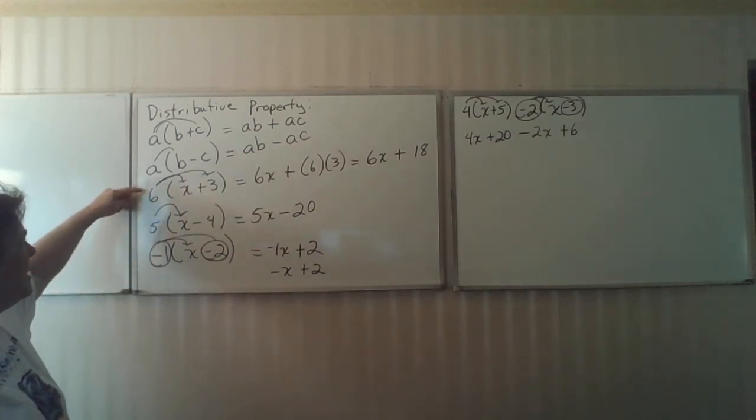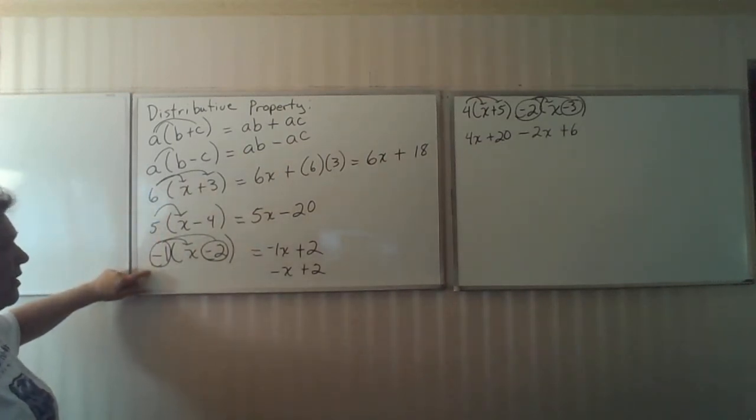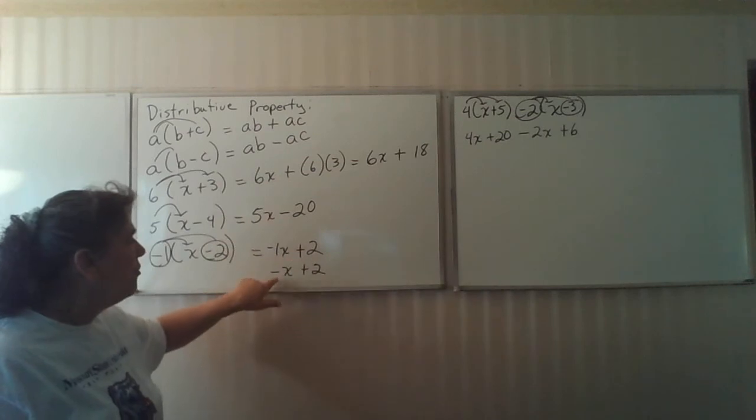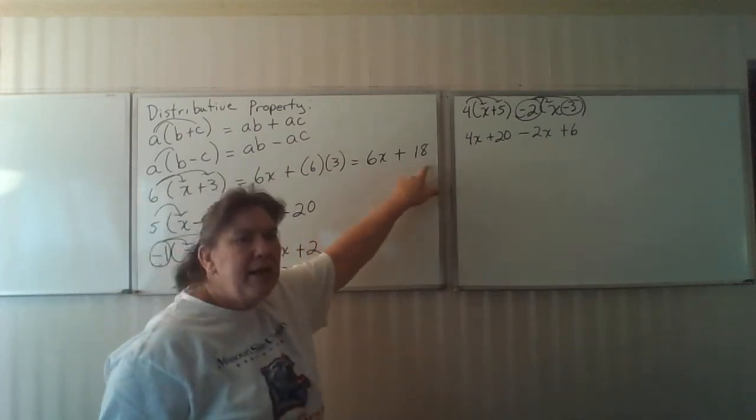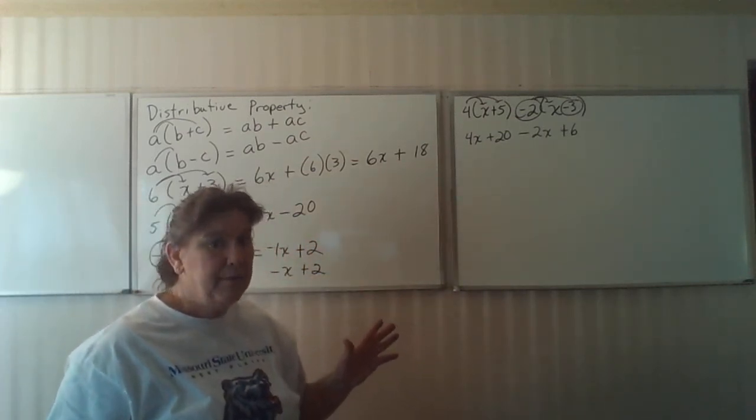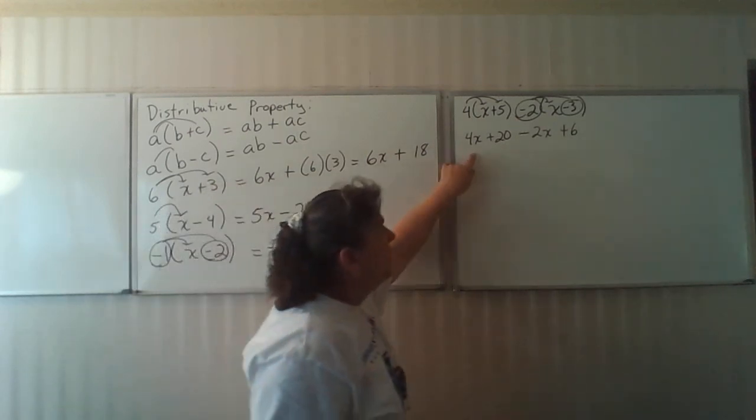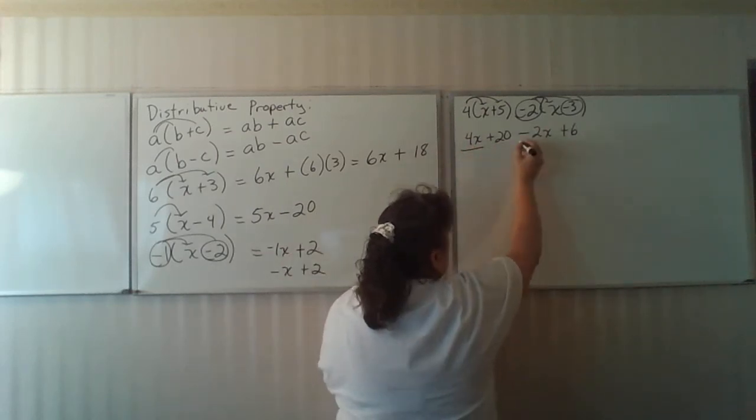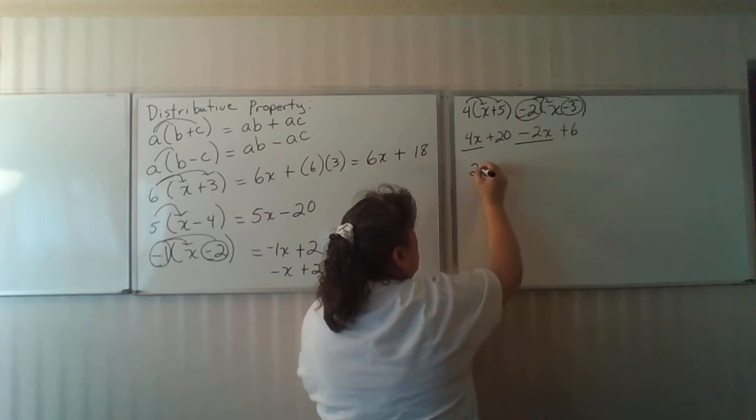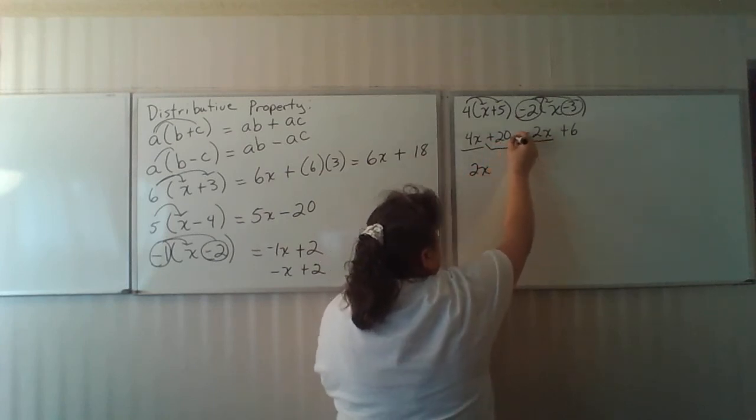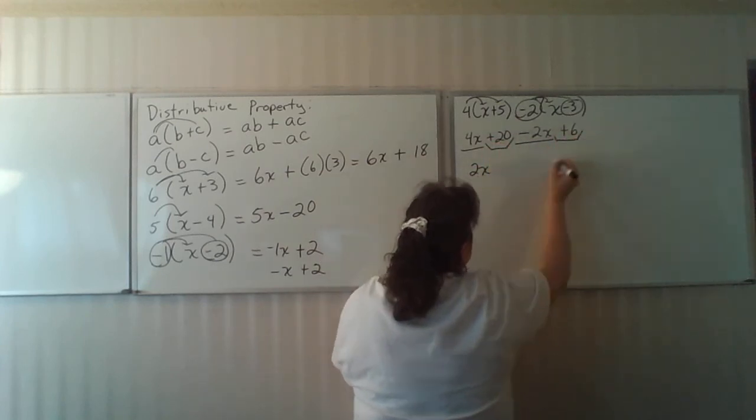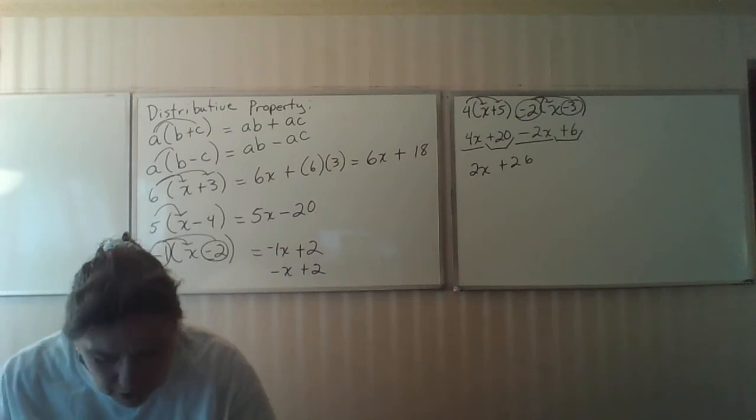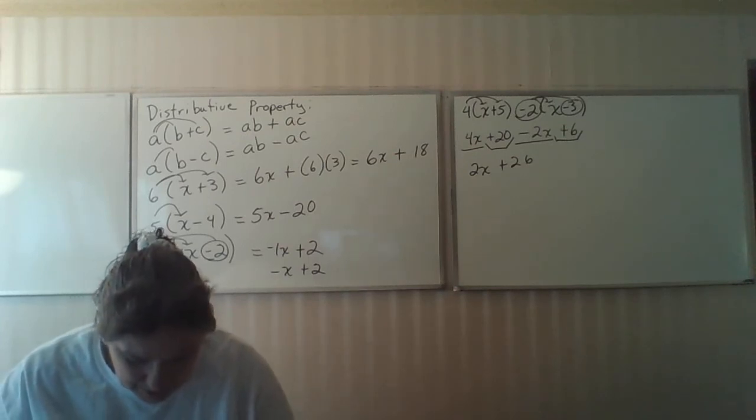When we did all of these, when we finished our distribution, we were finished, because there are no like terms here. But this one is not finished. We do have like terms. 4X minus 2X is a positive 2X. 20 plus 6 is plus 26. You always have to finish it all the way down to the end.